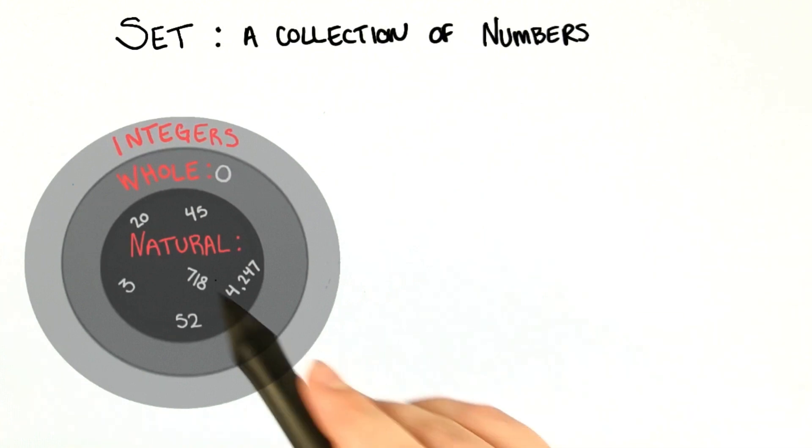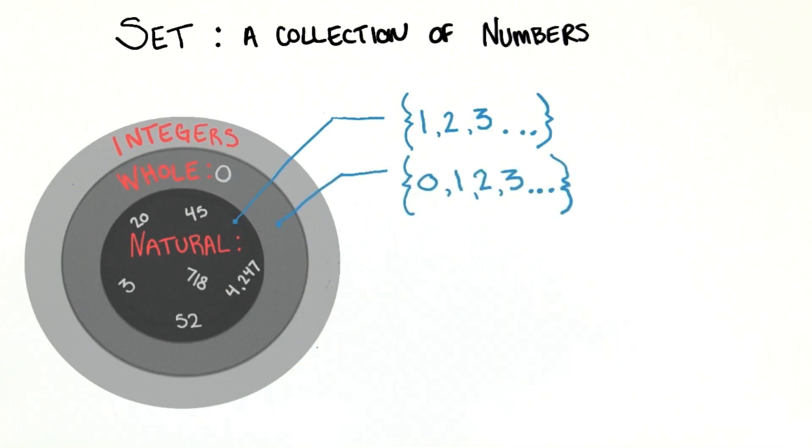So the natural numbers is the set 1, 2, 3, and so forth. And the whole numbers is the set 0, 1, 2, 3, and so forth.